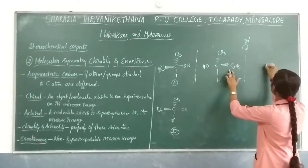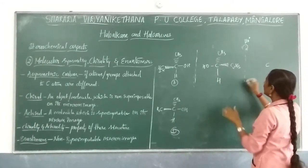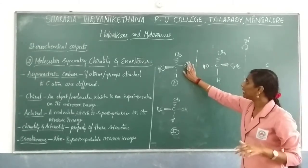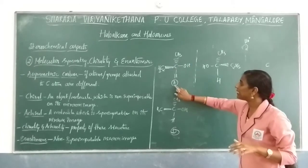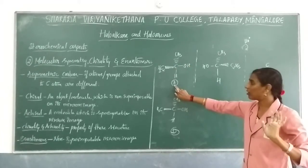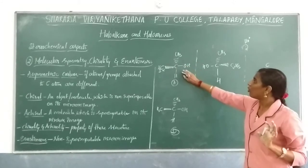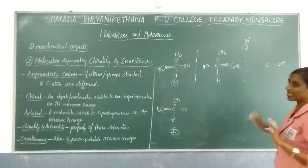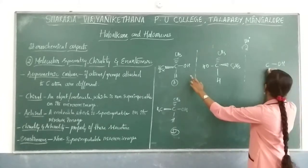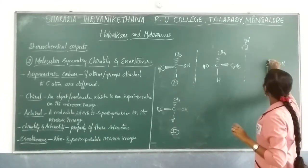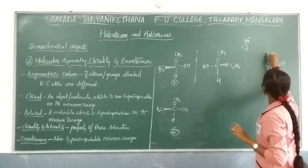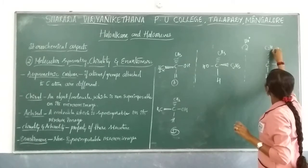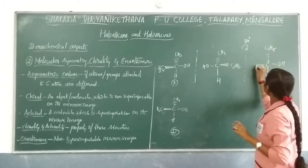When you rotate this, the rotation takes place in such a way that your OH group should be kept in the same place as in structure A — the same position where the OH group is present. You are supposed to place it there, and H will go accordingly. C2H5 will be as before.